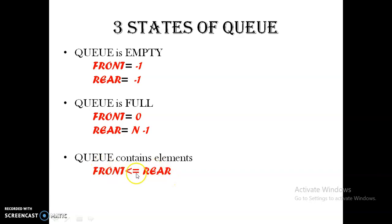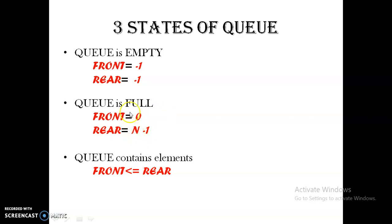Front less than or equal to rear means there are some elements in the queue. If front equals rear equals minus one, the queue is purely empty. If front equals zero and rear equals zero, there is one element. If front equals zero and rear equals one, there are two elements. Rear plus one gives the number of elements, so when rear equals N minus one, the queue holds N elements.